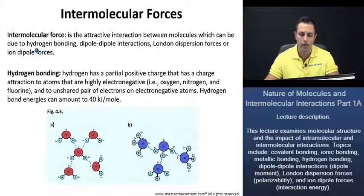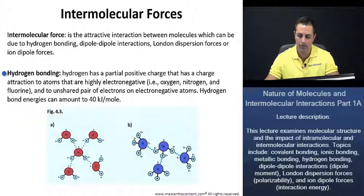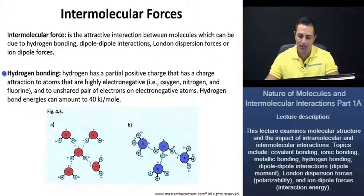Let's begin with hydrogen bonding and take a look at what hydrogen bonding is. Hydrogen has a partial positive charge that has a charge attraction to atoms that are highly electronegative — that is, oxygen, nitrogen, and fluorine — and to the unshared pair of electrons on electronegative atoms. Hydrogen bond energies can amount to 40 kilojoules per mole.